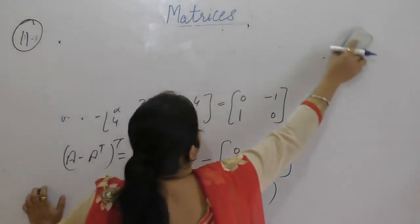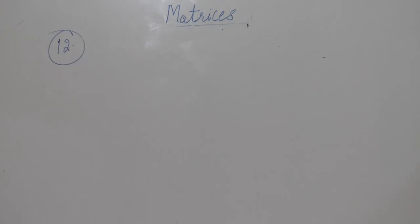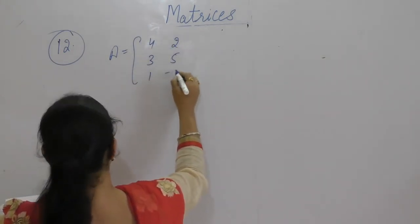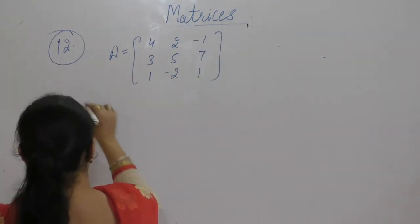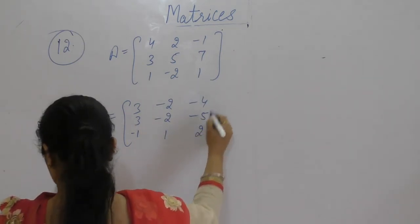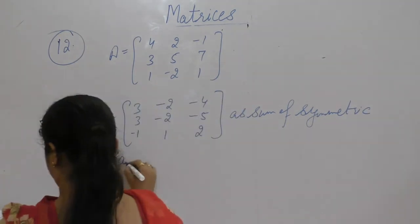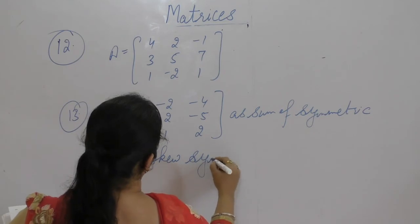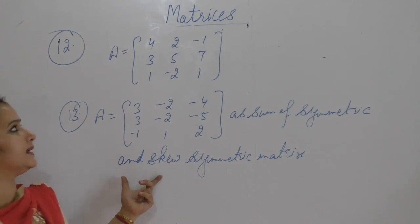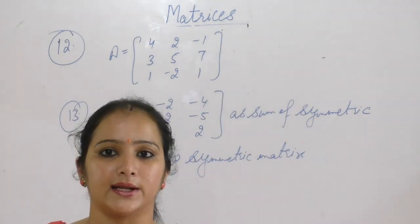Questions number 12 and 13 you will have to try by yourself. Both questions involve expressing a matrix as the sum of symmetric and skew-symmetric matrices, similar to what we proved here — that any square matrix A can be expressed as the sum of symmetric and skew-symmetric matrices.